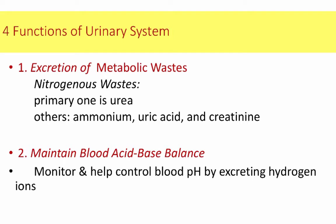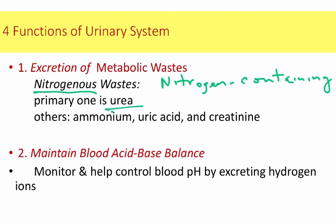So four functions for the urinary system. First is excreting metabolic waste, and the most important of those are called nitrogenous waste. Nitrogenous just means nitrogen-containing. The primary nitrogenous waste in humans is called urea, but we also make ammonium, uric acid, and creatine. We actually produce ammonia as a normal part of our metabolism, but it's quickly converted into urea because it's less toxic.